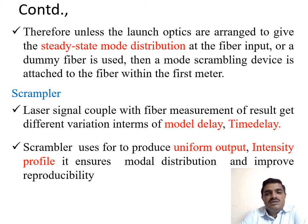Therefore, unless the launch optics are arranged to give a steady-state mode distribution at the fiber input, a dummy fiber is used for the scrambling process. We have already seen that the purpose of the scrambler is to produce uniform output in the presence of different variations like modal delay and time delay. The scrambler produces uniform output intensity profiles, ensuring improved reproducibility. Reproducibility means that once the noise signal is removed, the structure remains uniform.